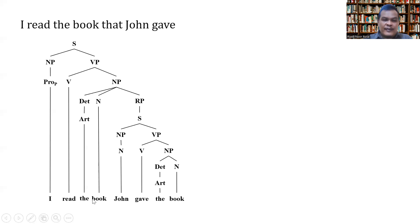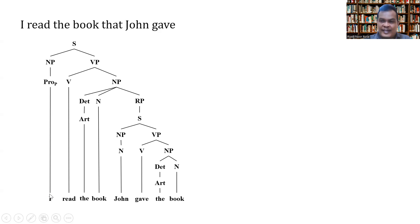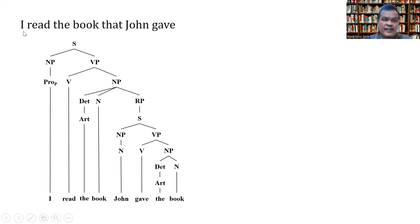The words here do not completely represent the sentence we are analyzing, because the deep structure is: 'I read the book, John gave the book.' Before analyzing a sentence that experiences a transformation, we must find its deep structure. The analysis of transformation must begin with this deep structure: 'I read the book, John gave the book.' This is the deep structure of 'I read the book that John gave.'